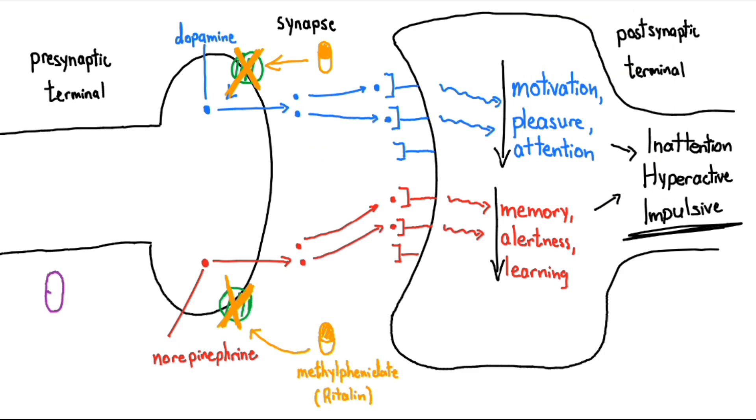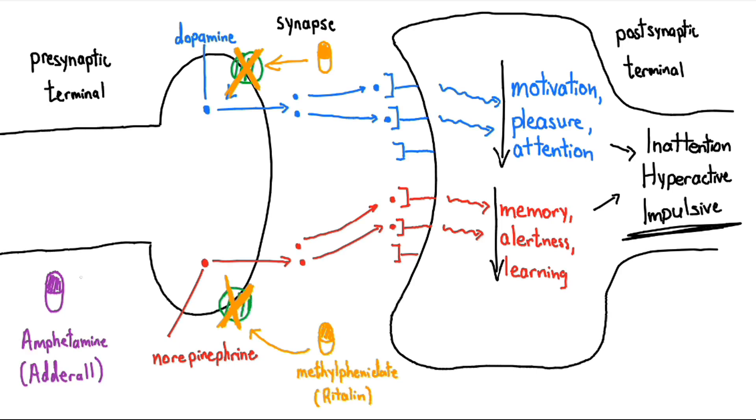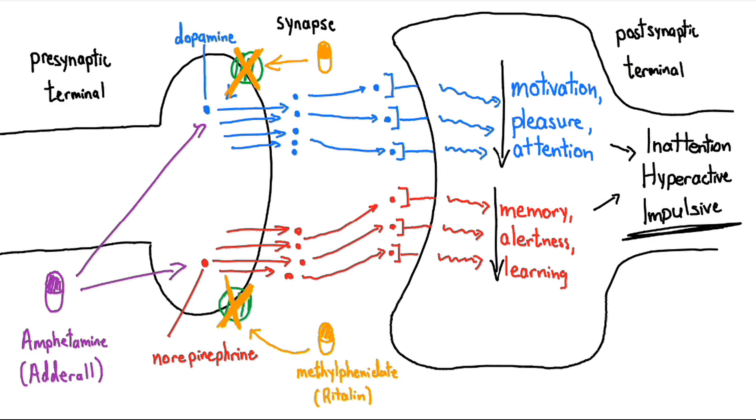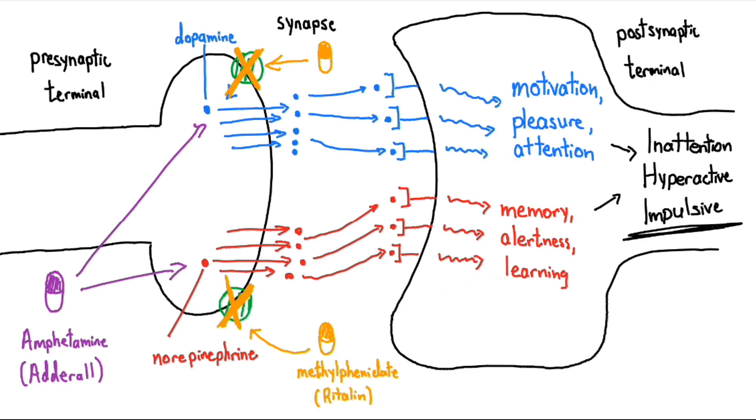Amphetamine, or Adderall, acts a bit differently. They promote the release of dopamine and norepinephrine from their storage sites in the presynaptic neuron. With more dopamine and more norepinephrine in the synapse, there is more stimulation of their receptors, and this causes a decrease in ADHD symptoms.